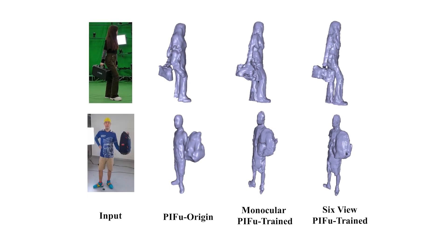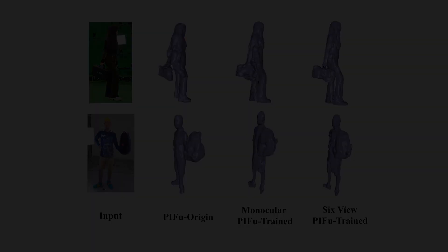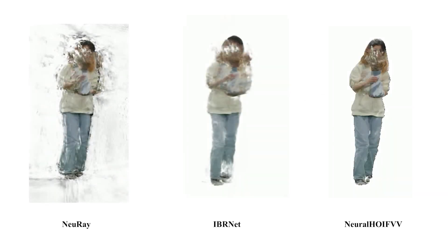Our pipeline and dataset can enable various geometry reconstruction methods, even for human-object geometry reconstruction settings. We benchmark state-of-the-art algorithms in sparse-view geometry reconstruction tasks. Additionally, HO-Dome supports various neural rendering tasks, providing a benchmark on sparse-view rendering tasks and evaluating on IBRNET, NOI-RAY, and NeuralHuman FVV.